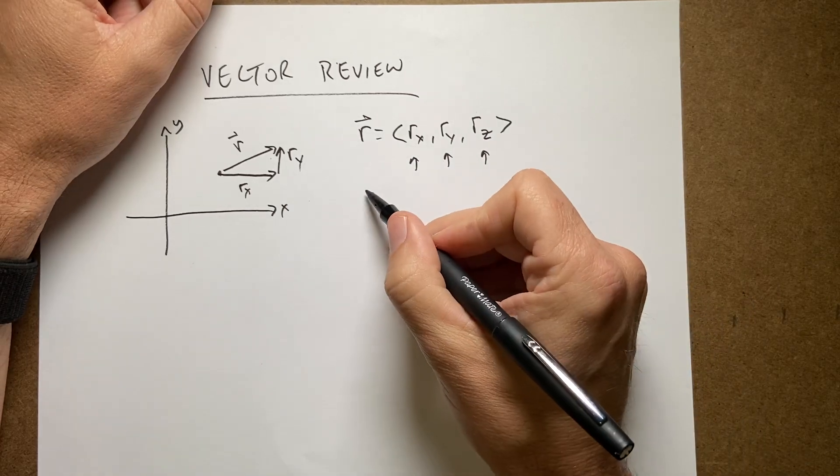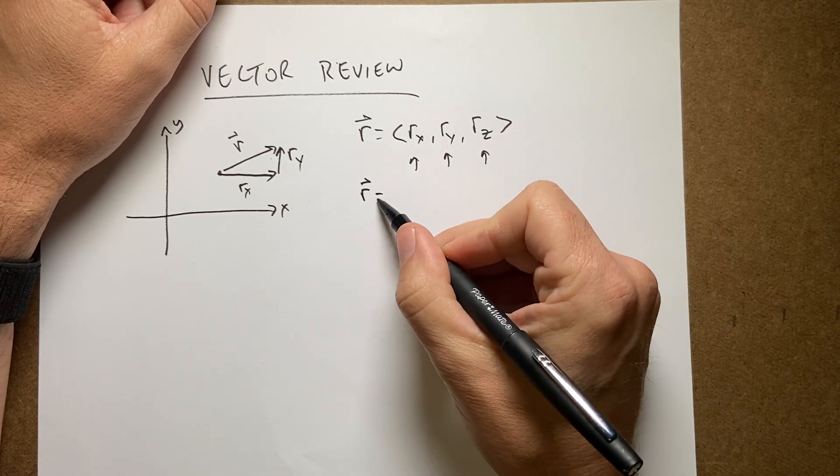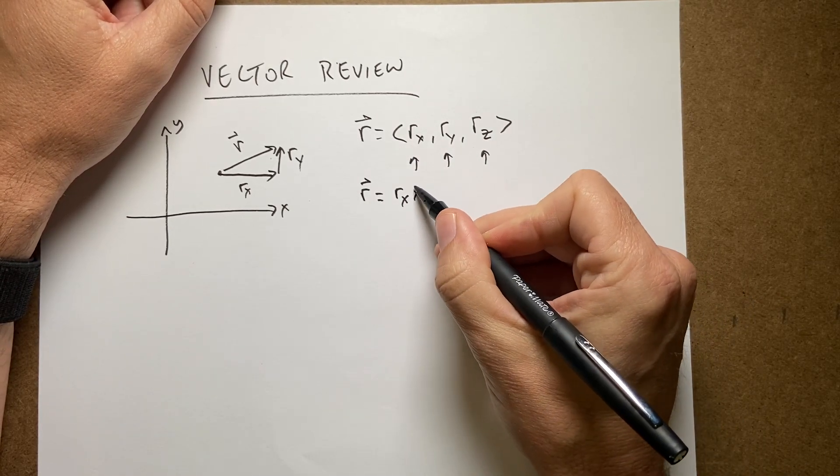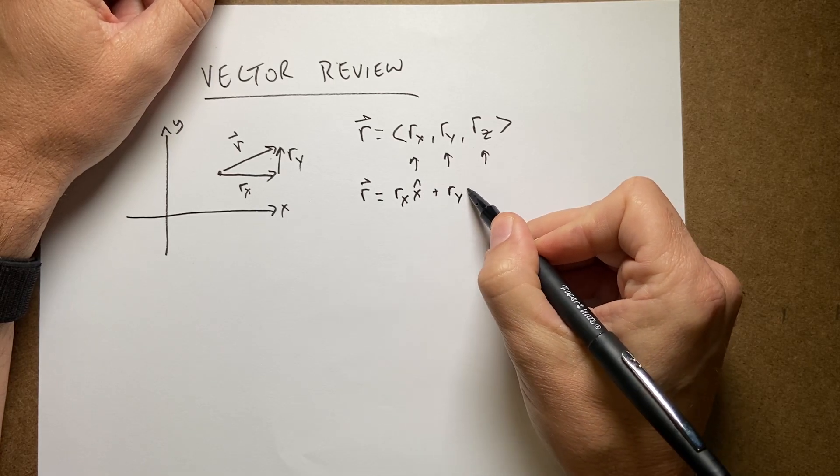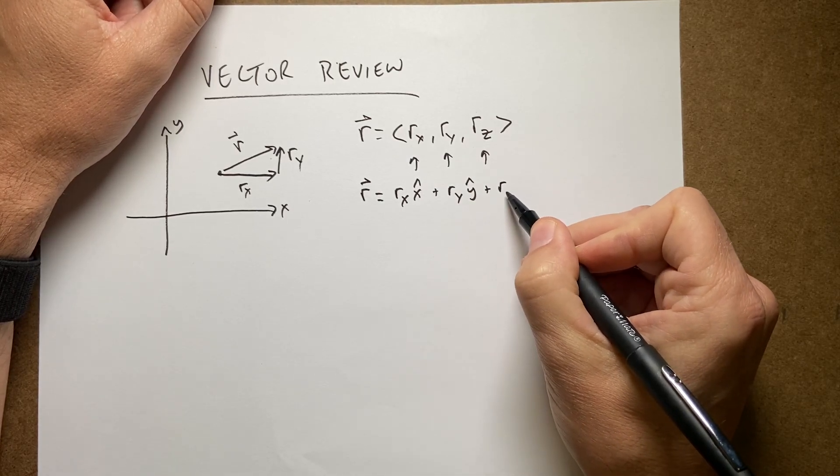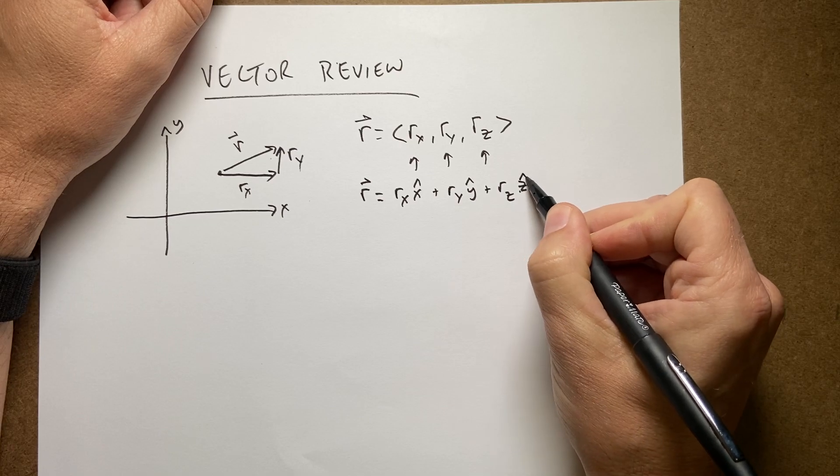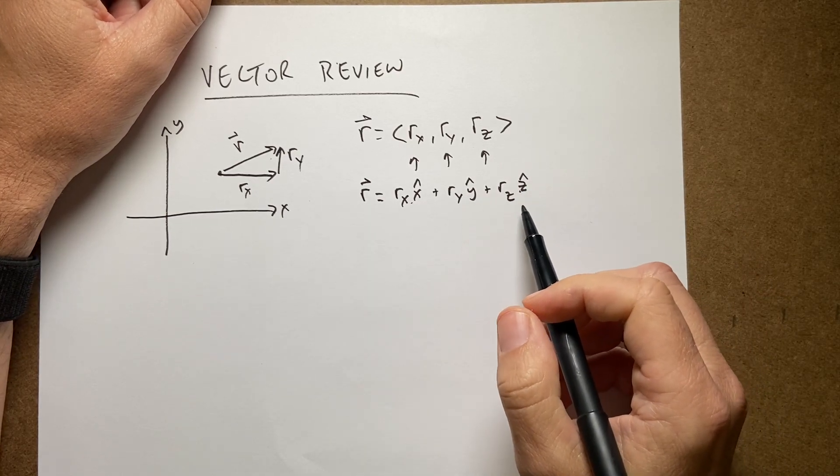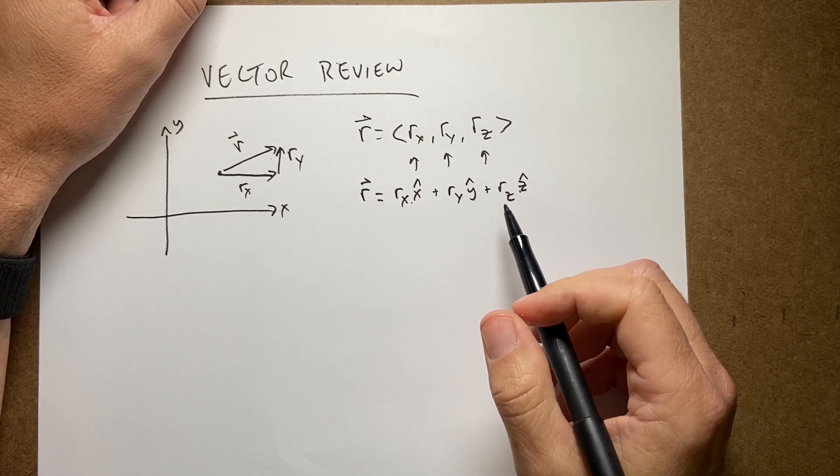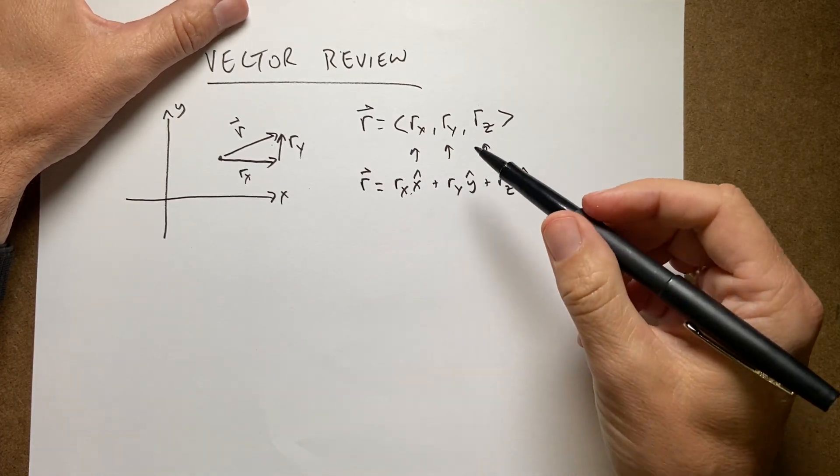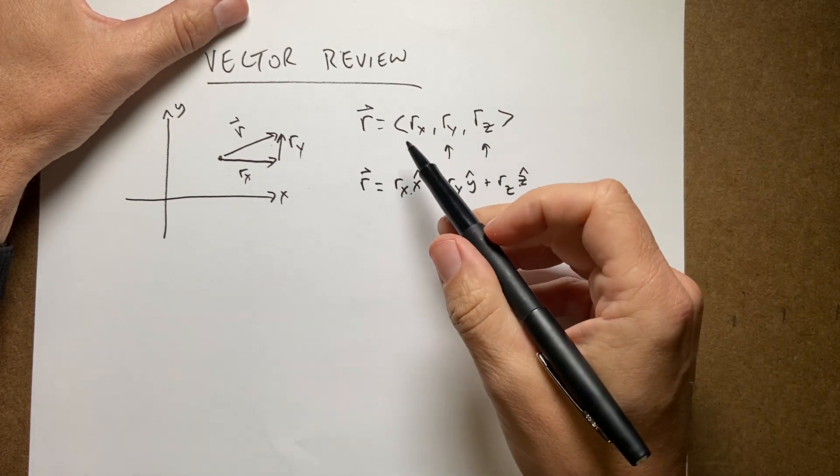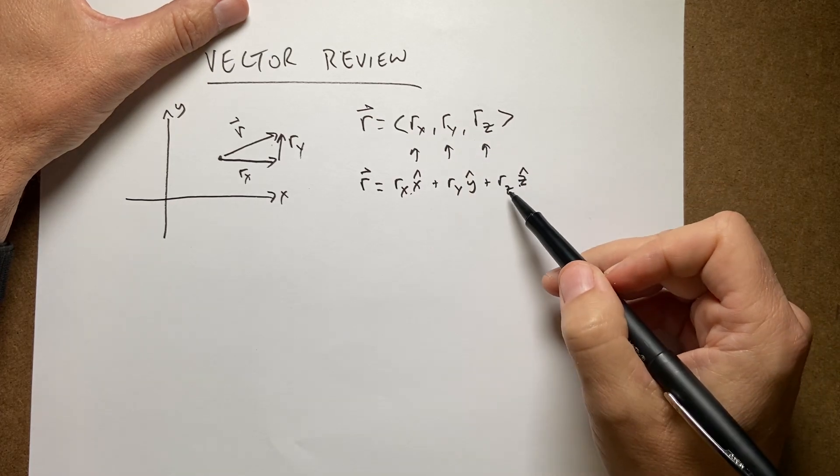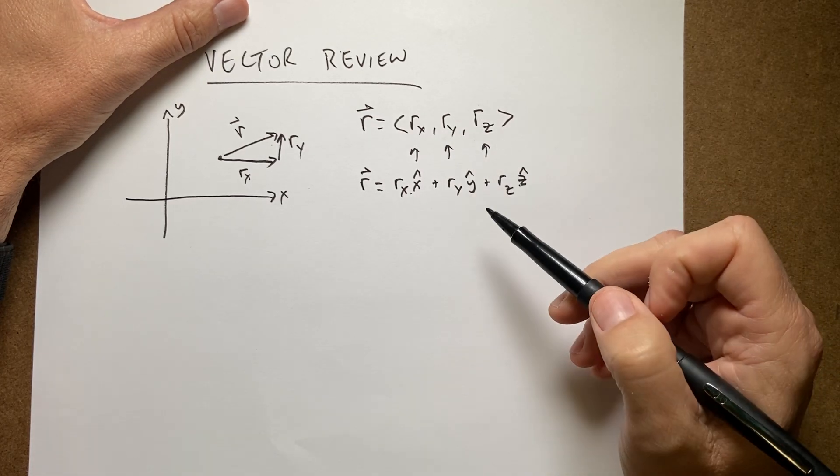A lot of times you may see something like this too. r equals rx x hat plus ry y hat plus rz z hat. Where x hat, y hat, and z hat are unit vectors in the corresponding x, y, and z directions. This is the same thing. It's just a shorter notation for saying the exact same thing. And so I'm going to stick with that.